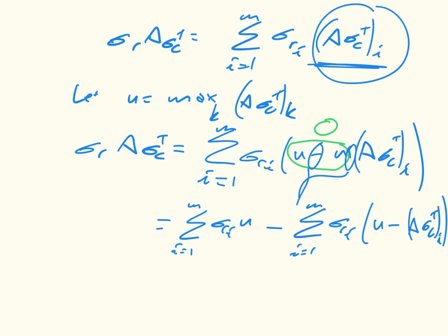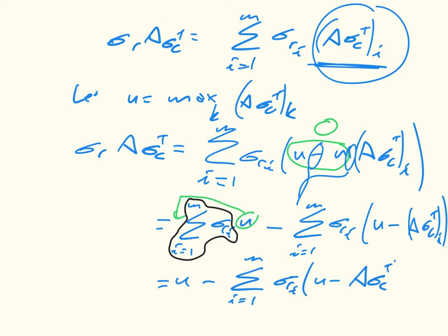However, the U we can take out, and then all we're left with is the sum of all the probabilities, so that's just going to be 1, so that's just equal to U minus this same expression. So minus sum from i equals 1 to m sigma R i times U minus A sigma C T i.